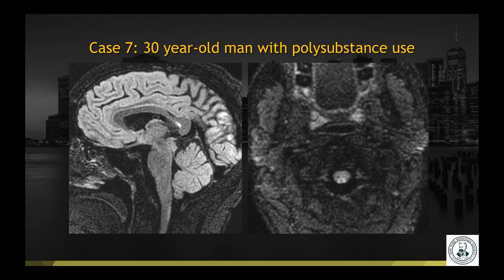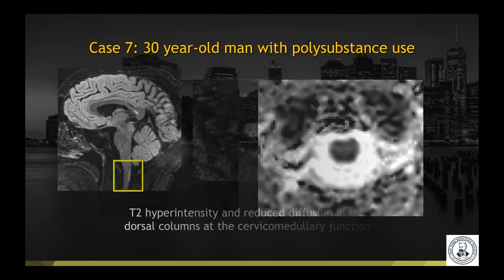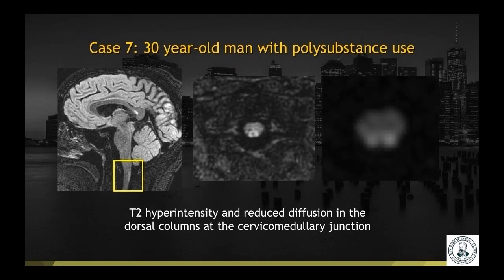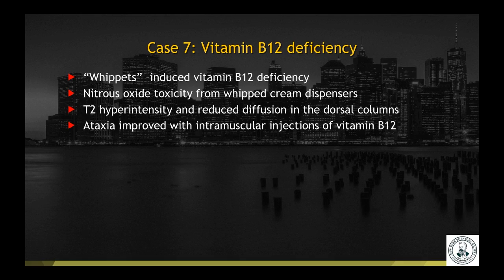Case number seven is a 30-year-old man with polysubstance use. Sagittal and axial T2 FLAIR images, along with diffusion and ADC map, demonstrate T2 hyperintensity and reduced diffusion in the dorsal columns at the cervical-medullary junction. This was a case of vitamin B12 deficiency, in this case induced by whippets — nitrous oxide toxicity from inhaling whipped cream dispensers. Classically, you get this T2 hyperintensity and reduced diffusion in the dorsal columns. Patients often present with ataxia, which improves with intramuscular injections of vitamin B12.